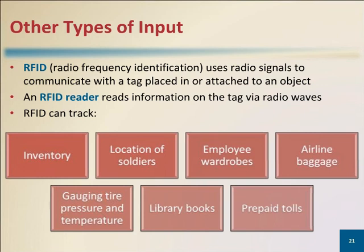RFID technology uses radio signals to communicate with a tag placed in or attached to an object, an animal, or a person. An RFID reader reads information on the tag via radio waves. Uses of RFID include tracking times of runners in a marathon, tracking airline baggage or inventory, checking lift tickets of skiers, checking out library books, and tracking payment as vehicles pass through booths on tollway systems.